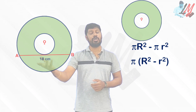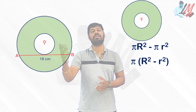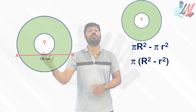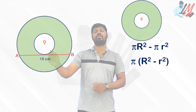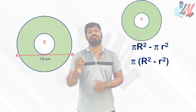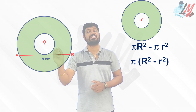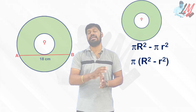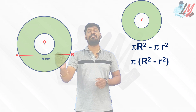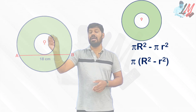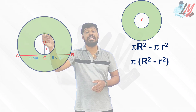Without any information about the radii of either circle, they are asking us to find the area of the ring — with only one piece of information: the length of the chord of the big circle which is tangent to the small circle, given as 18. Since AB is touching the smaller circle, let me join it with center O.